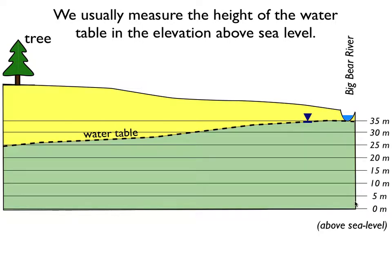With the water table, we usually talk about how high the water table is above sea level, and we just write down its elevation. At this point here, the water table is 35 meters above sea level. Over here, we're at about 30 meters, and if we had a well over here, it would show the groundwater table at 25 meters above sea level.